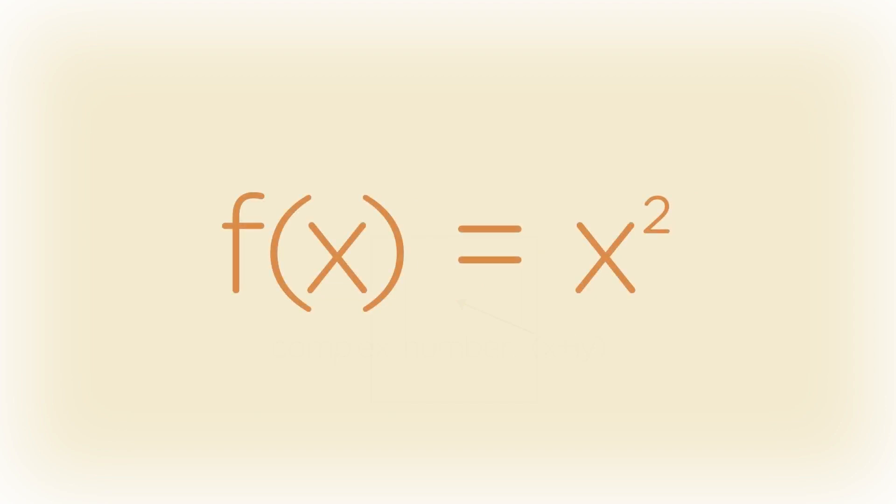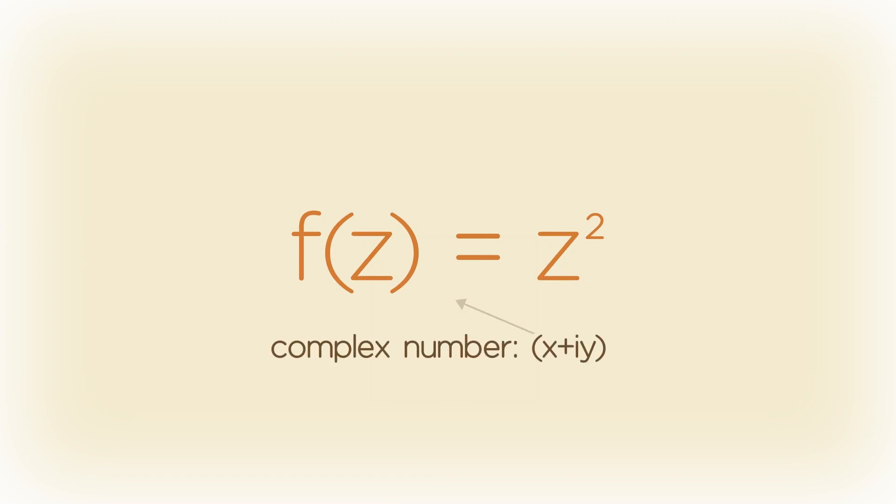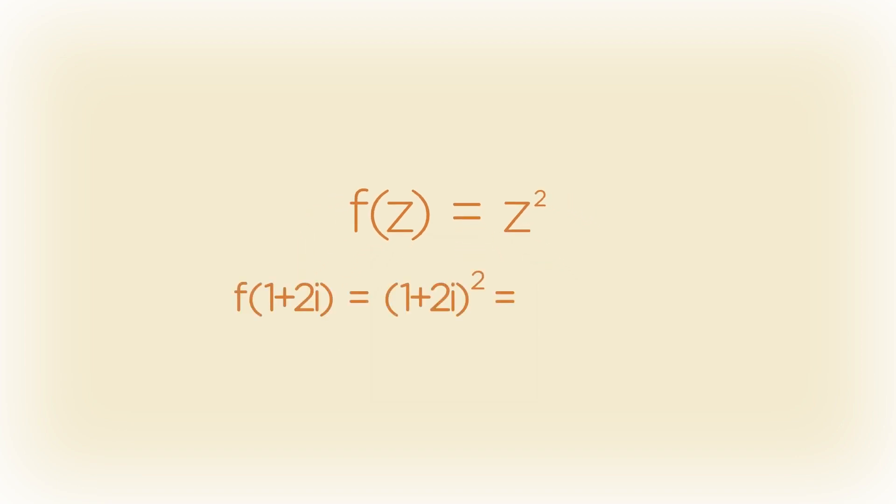When we have functions of x we assume only real numbers go in and in turn real numbers come out. One goes in one comes out, two goes in four comes out and so on to get a parabola. When we use z that's usually an indication that we can now plug in a complex number one with a real and imaginary component. Like if we plug in 1 plus 2i and go through the math, out comes negative 3 plus 4i.